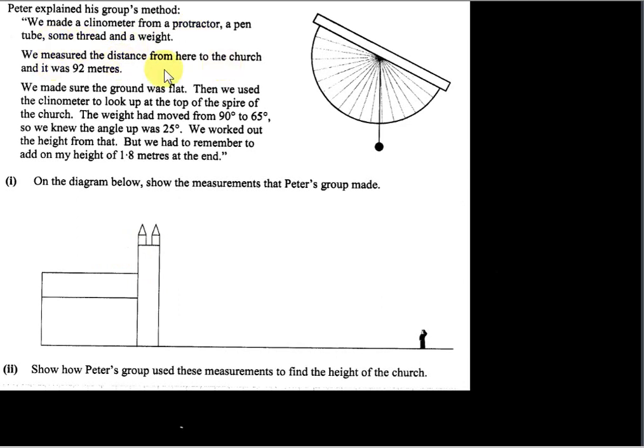We measured the distance from here to the church and it was 92 meters. We made sure the ground was flat. Then we used the clinometer to look up at the top of the spire of the church. The weight had moved from 90 degrees to 65 degrees, so we knew the angle up was 25 degrees.